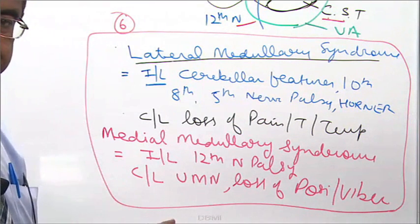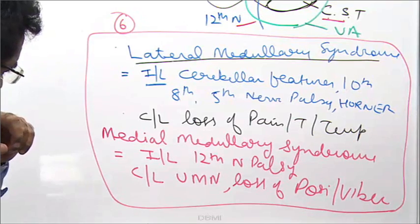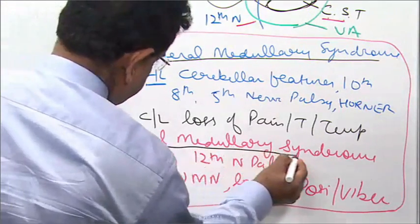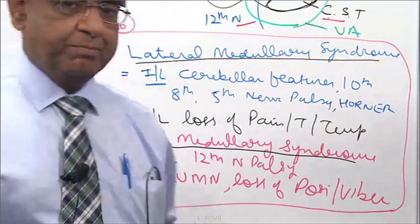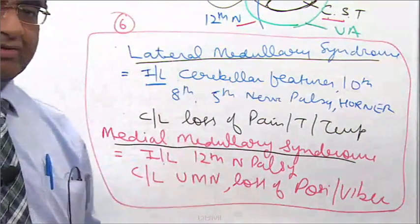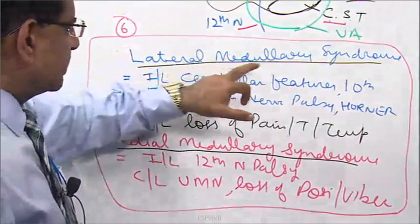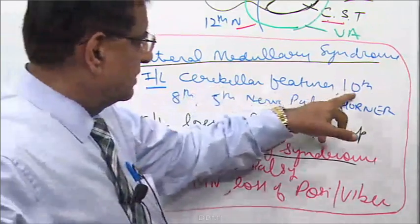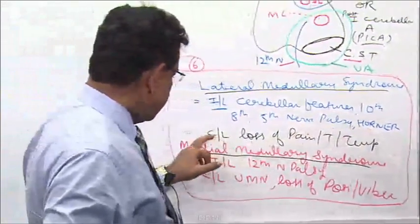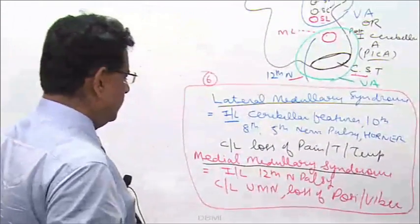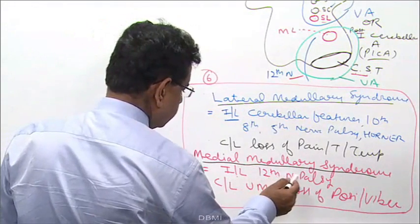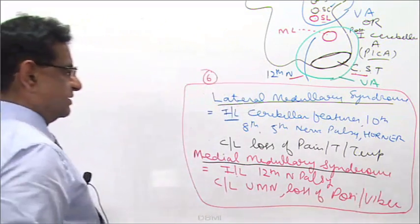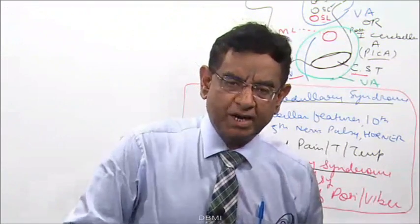Before moving to the pons, let's have a quick revision of medullary lesions. In lateral medullary syndrome: ipsilateral cerebellar and cranial nerve features, contralateral loss of pain, touch, and temperature. In medial medullary syndrome: ipsilateral twelfth nerve palsy, contralateral upper motor neuron features, contralateral loss of position and vibration sense.